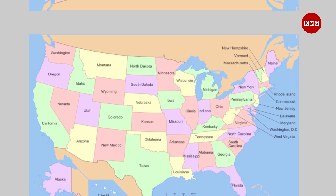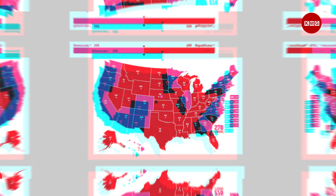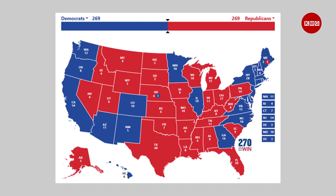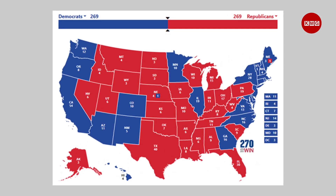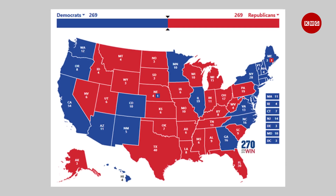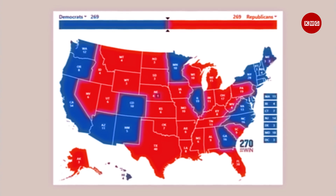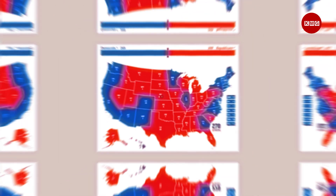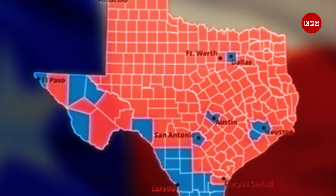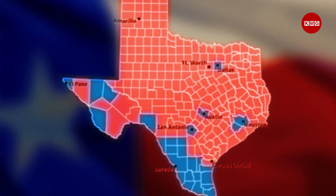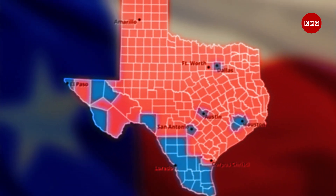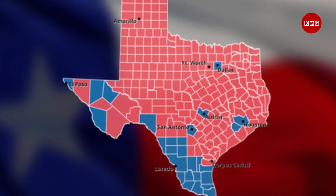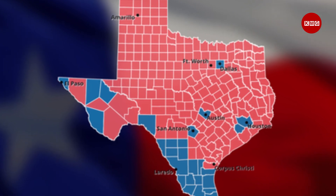So let's get started. As you can see, the map is quite different from the usual red-blue map that we see during presidential elections. Some states that are traditionally considered red or blue are actually more moderate or mixed in their political ideology. For example, Texas, which is often seen as a stronghold of the Republican Party,